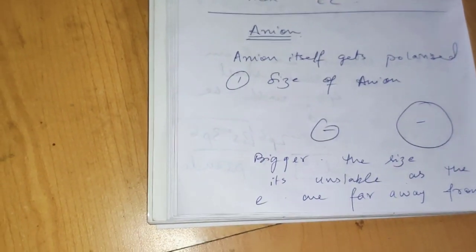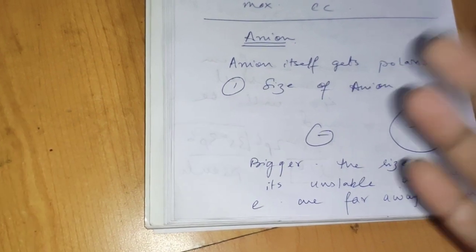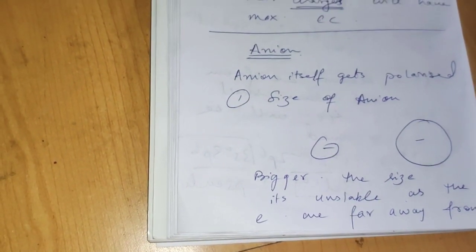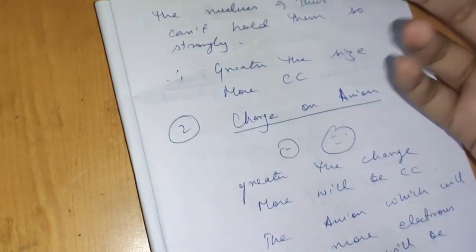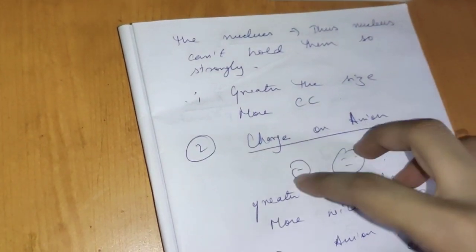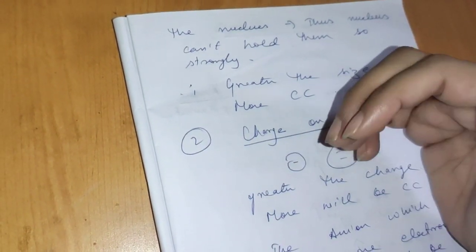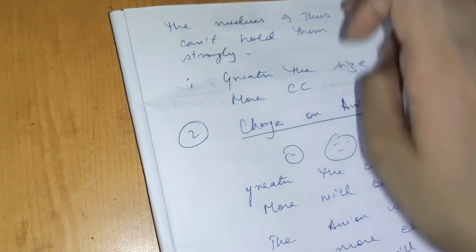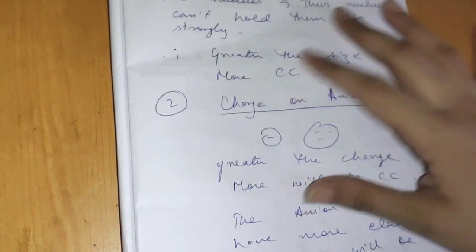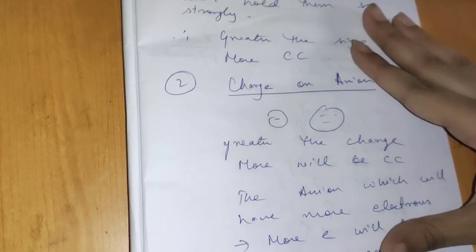For an anion to get polarized easily, the size should be bigger. If the size is smaller, the nucleus can hold everything together, but if the size is bigger, the nucleus can't hold the electrons as strongly because they are far away. Therefore, greater the size of the anion, greater will be the covalent character.